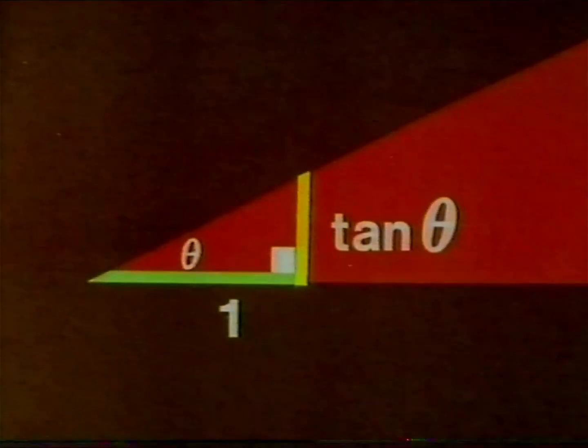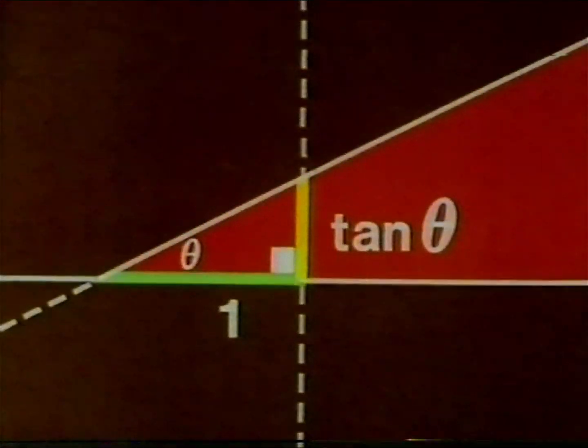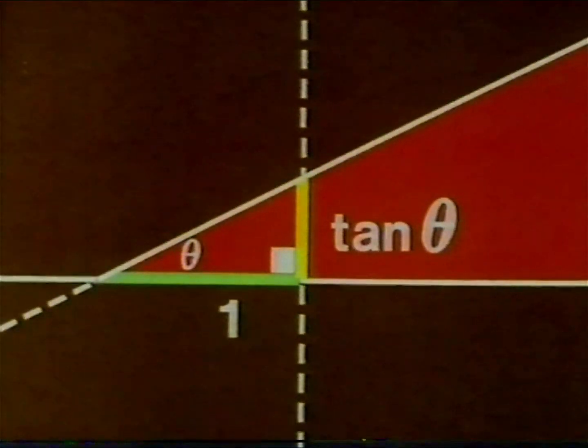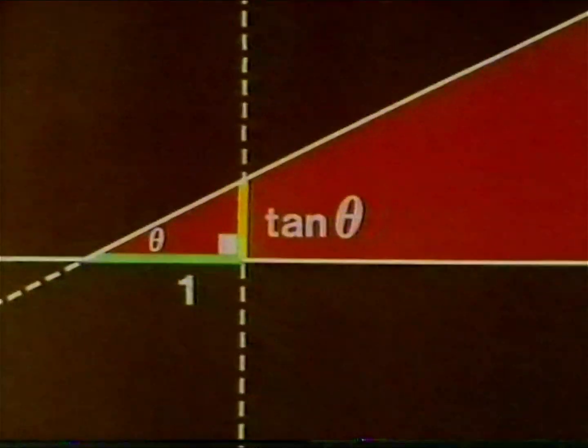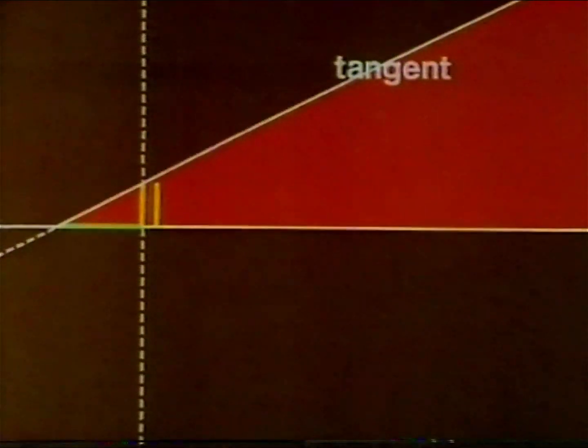When the side adjacent to the angle is one, the side opposite the angle, or the part of this line cut off by the angle, is the tangent of the angle. Let's collect some tangent lengths.